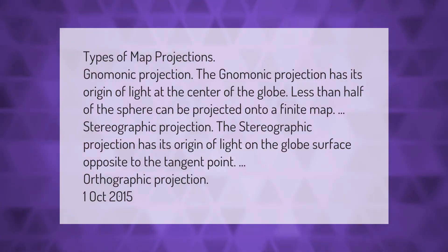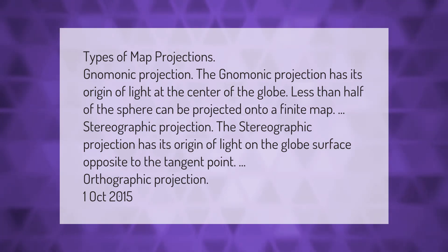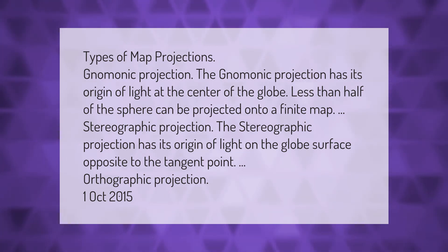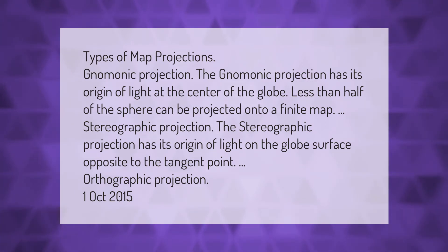Types of map projections: The gnomonic projection has its origin of light at the center of the globe, and less than half of the sphere can be projected onto a finite map. The stereographic projection has its origin of light on the globe surface opposite to the tangent point. The orthographic projection also falls within this category.